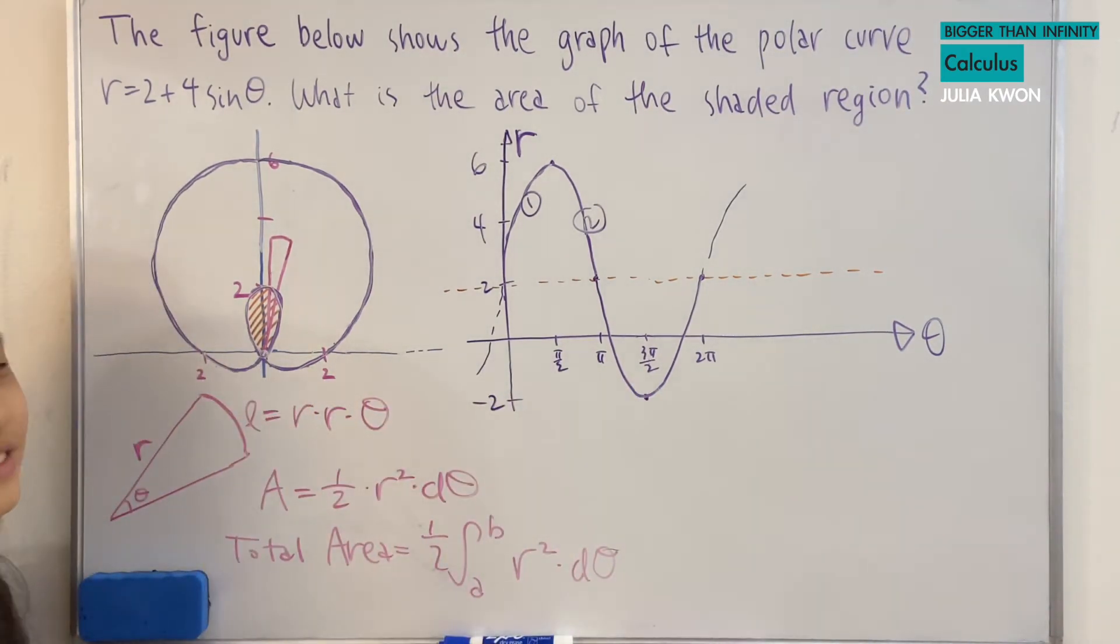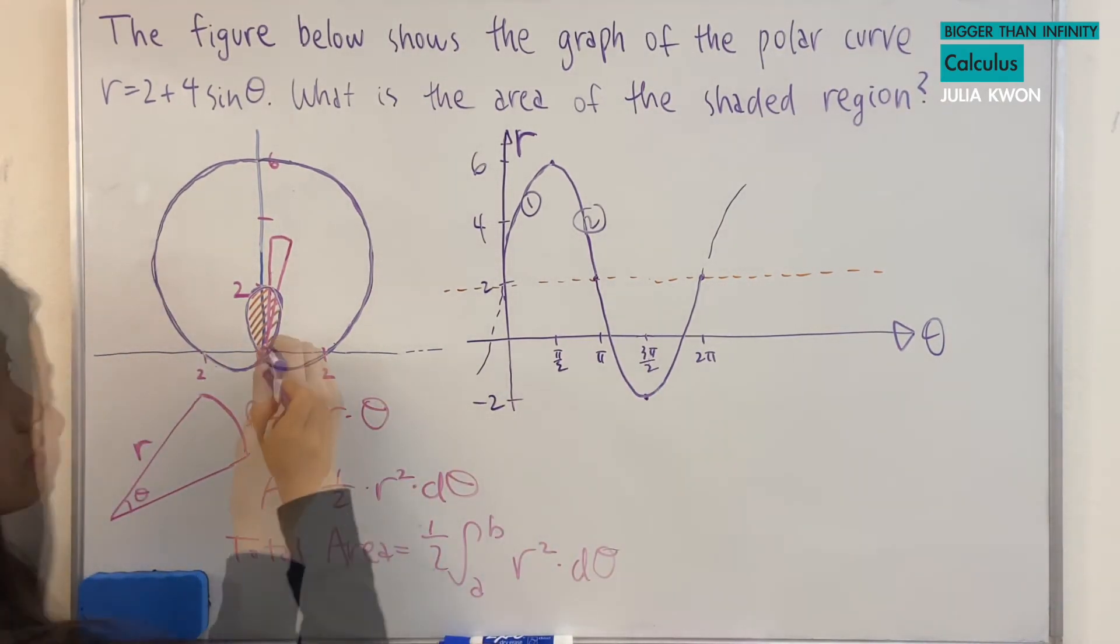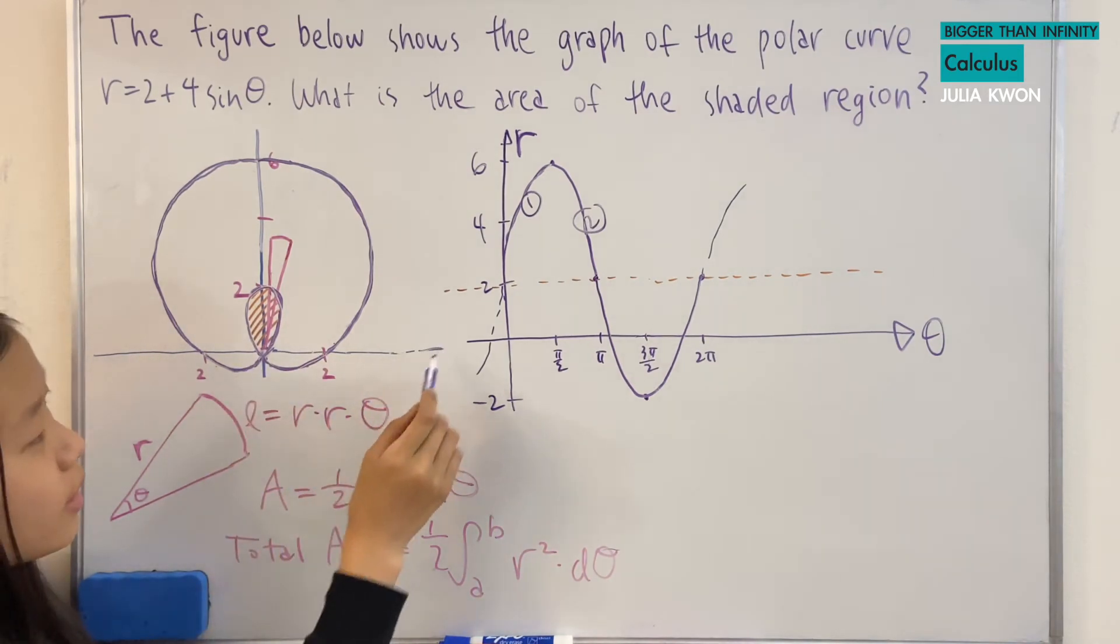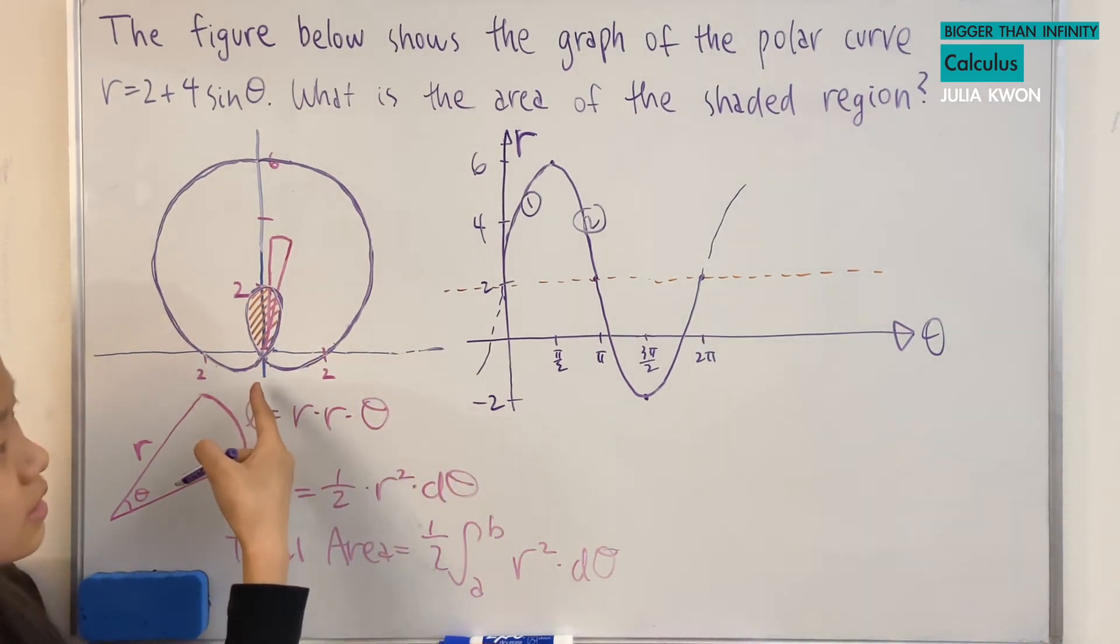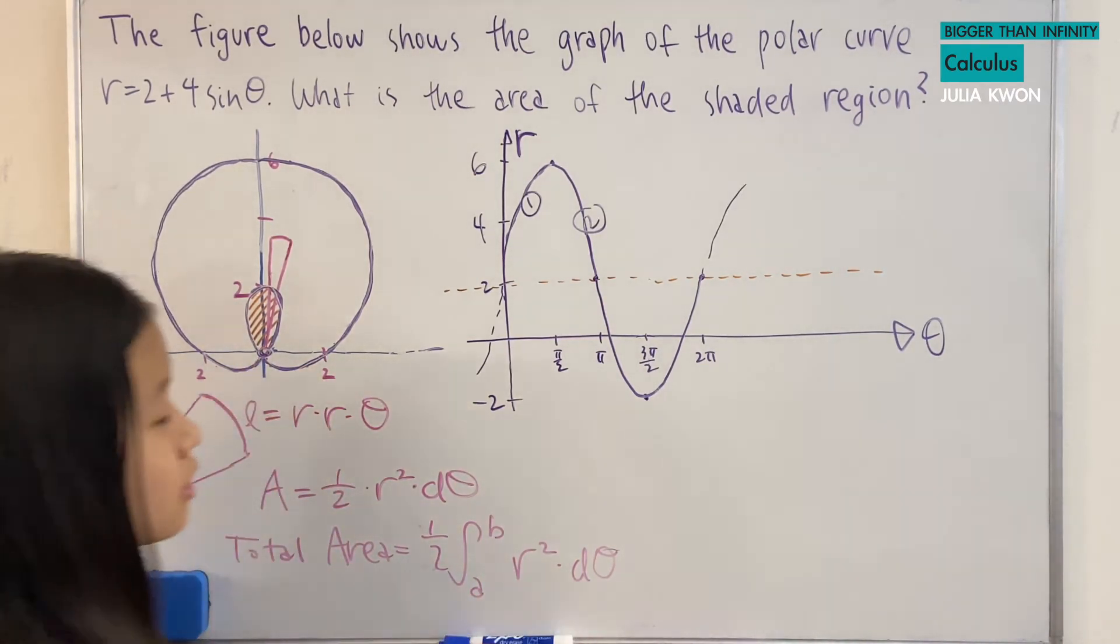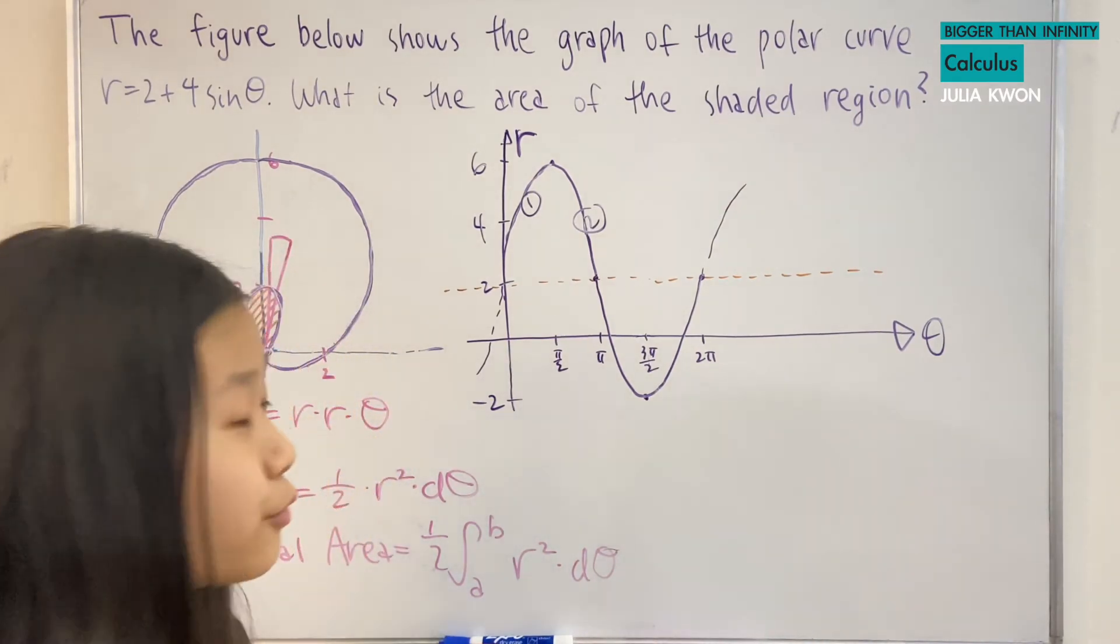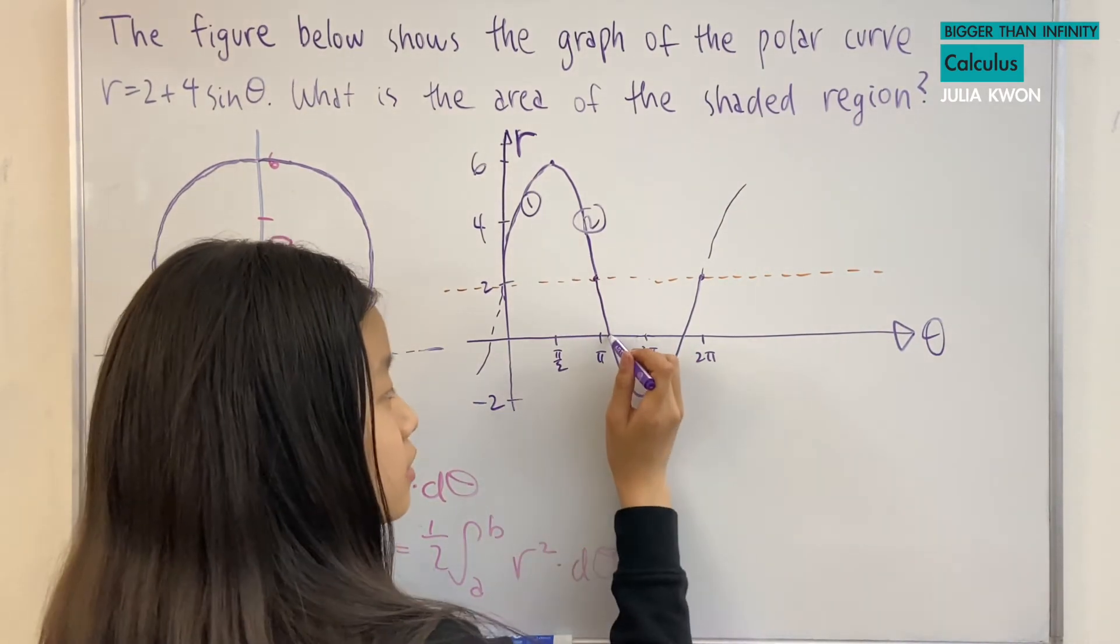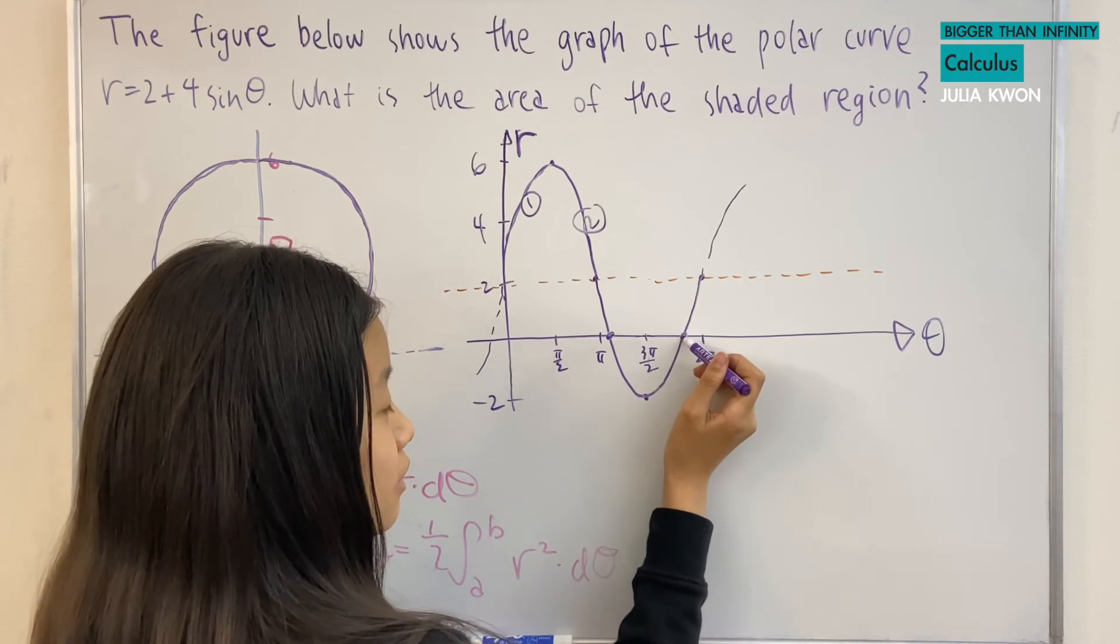If we were to do it from pi to 2 pi, then we would be finding the area of this curve. It's kind of hard to explain this, but the part where it encloses this is when theta equals zero, because it touches right in the center. And so we just have to find these two theta values.